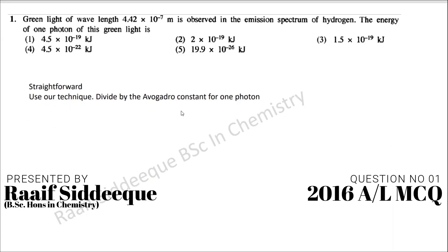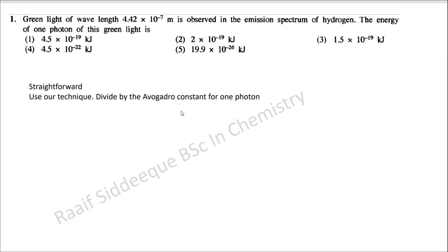This is another important MCQ paper because there are a lot of information that you can take. We will start with the first one. The wavelength of green light is given here and is observed in the emission spectrum of hydrogen. The energy of one photon of this green light is...